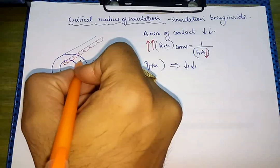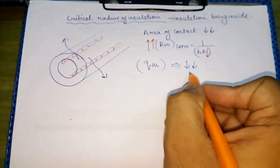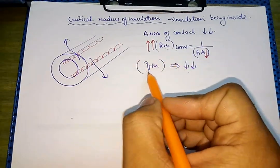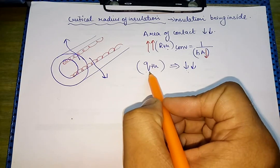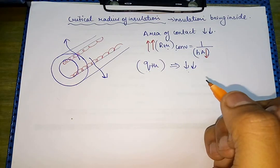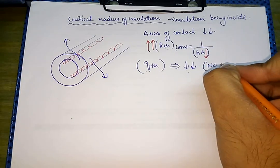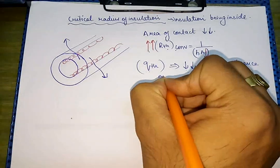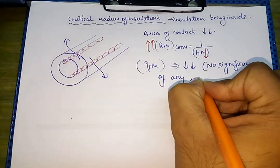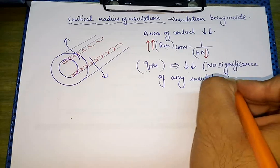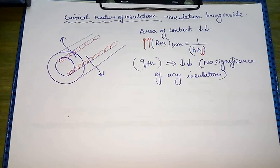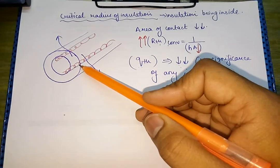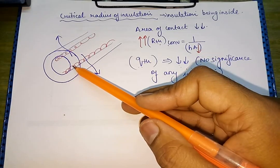We need the heat to get out, but when the insulation is inside, the heat will not get out. So overall, there will be no significance of the critical radius of insulation. Practically we can say there is no significance of any insulation in this configuration, because the heat transfer is decreasing — our purpose has failed. So we will never put any insulation on the inside portion of the system.